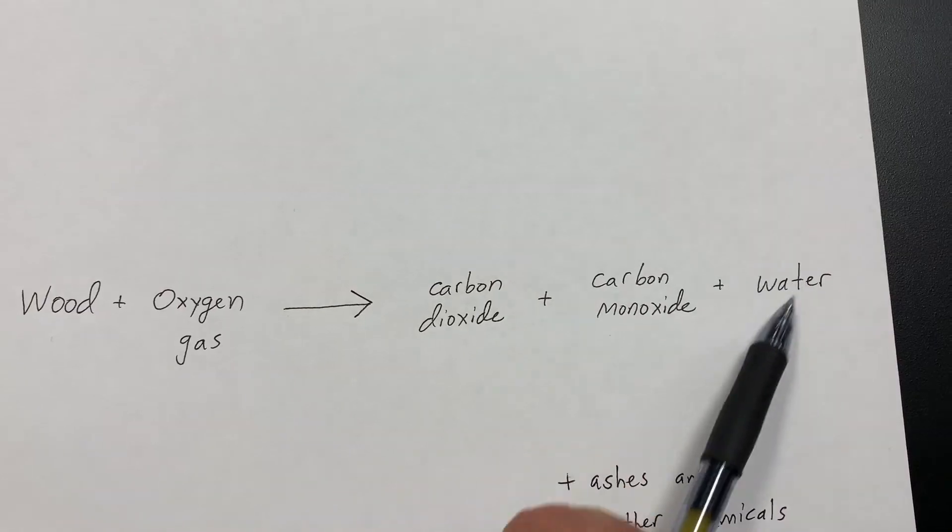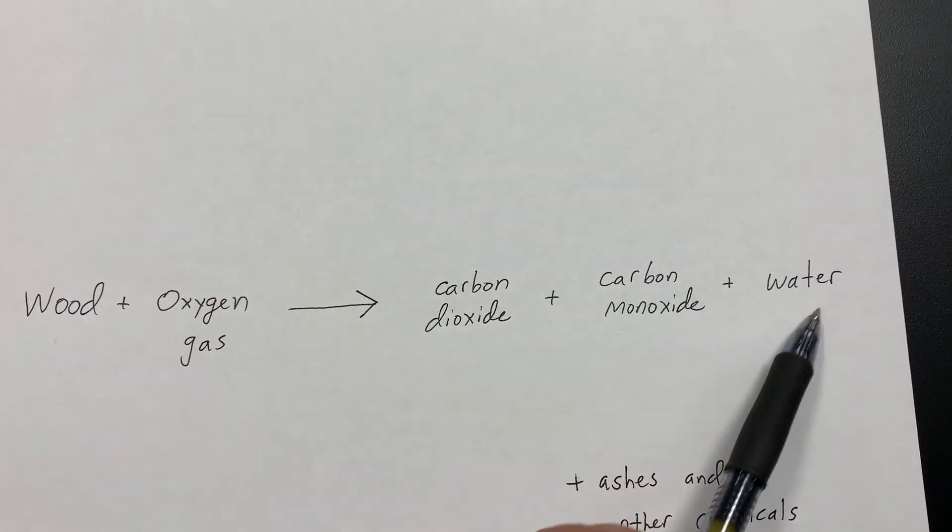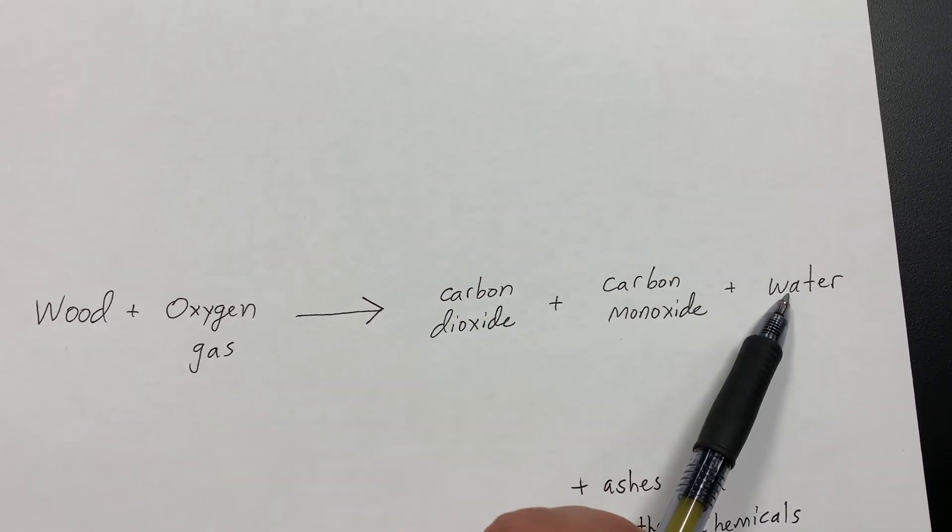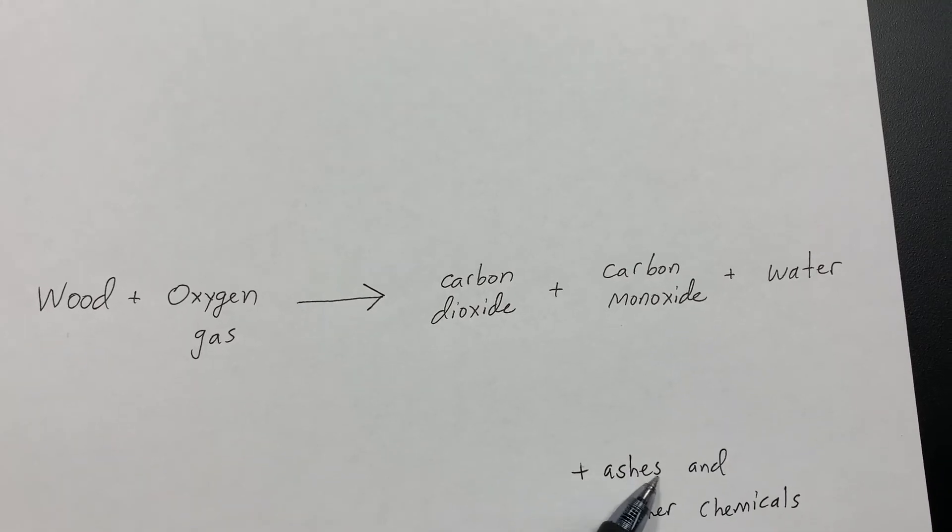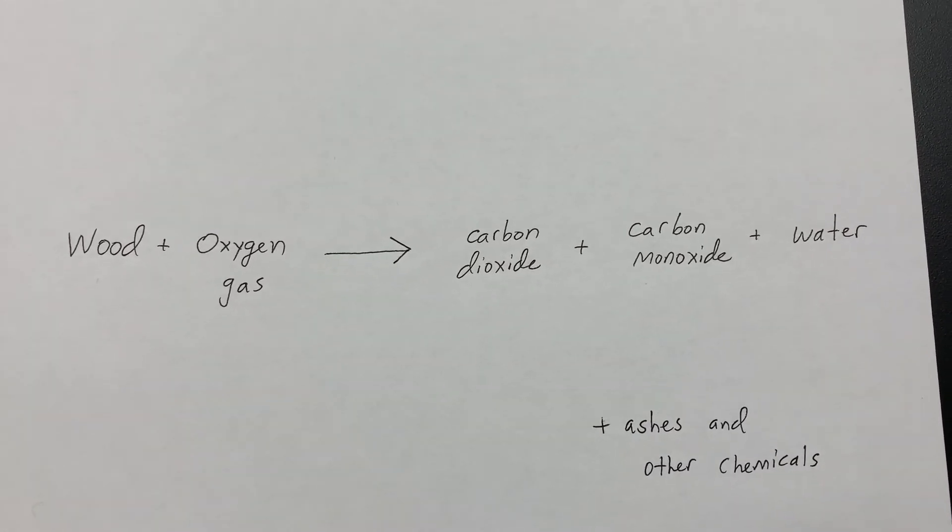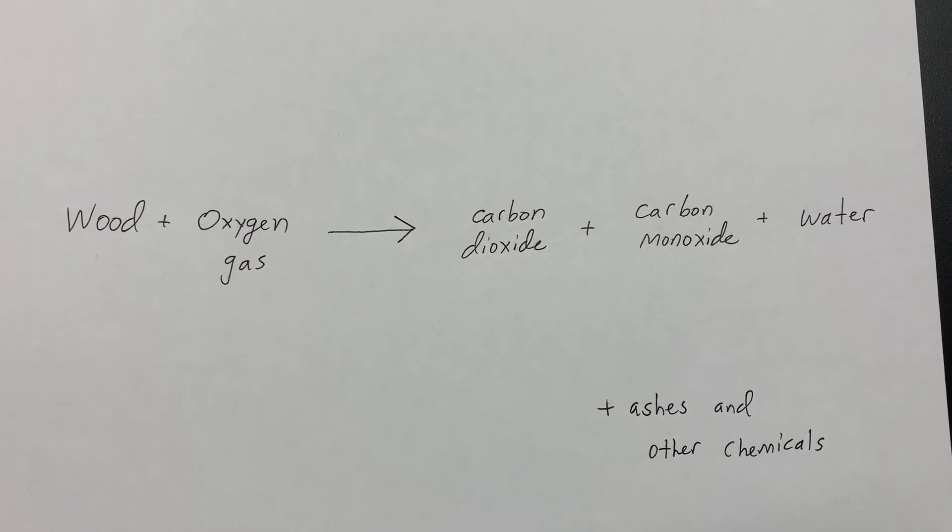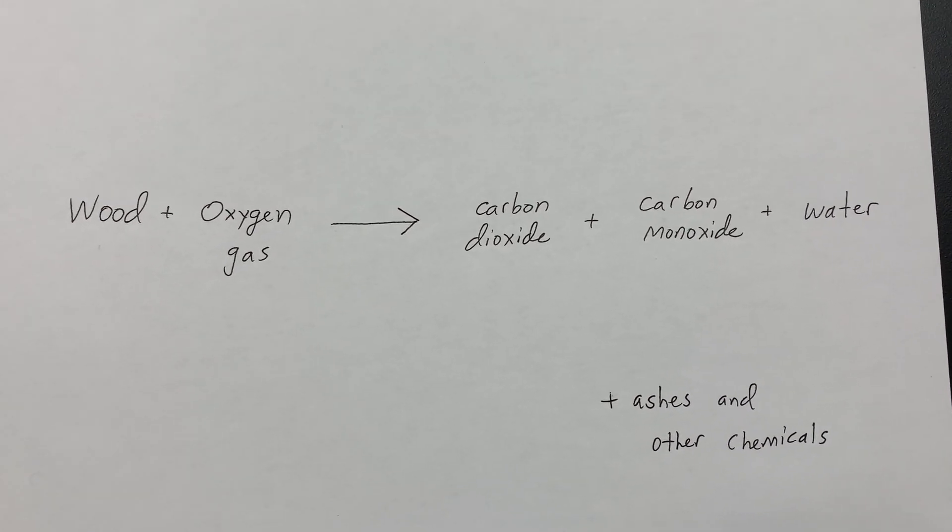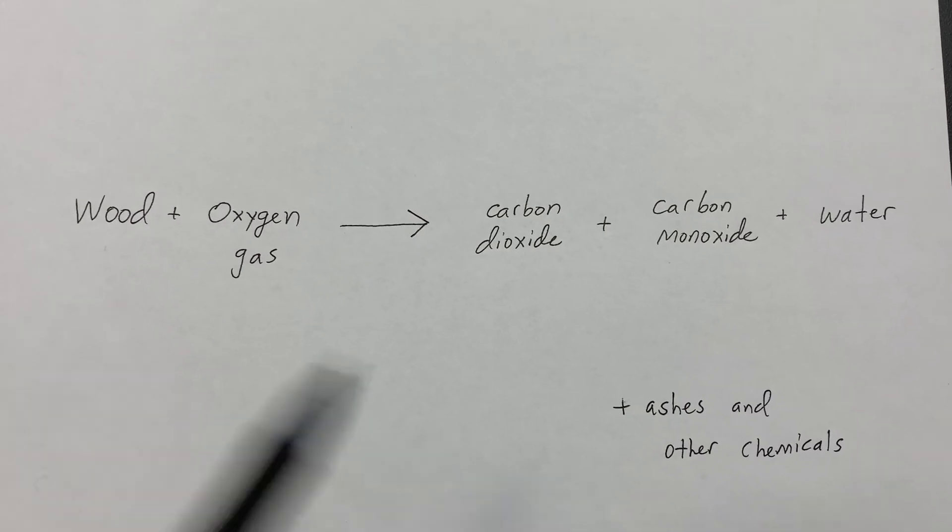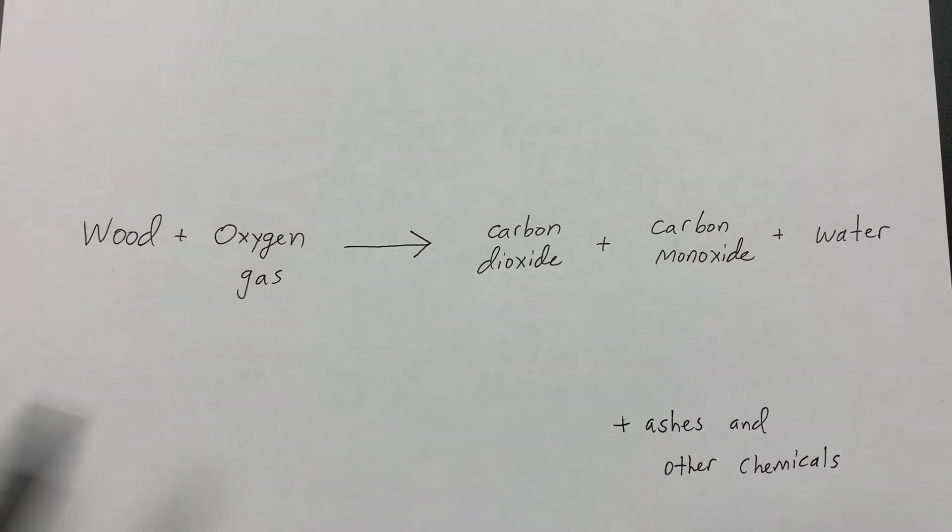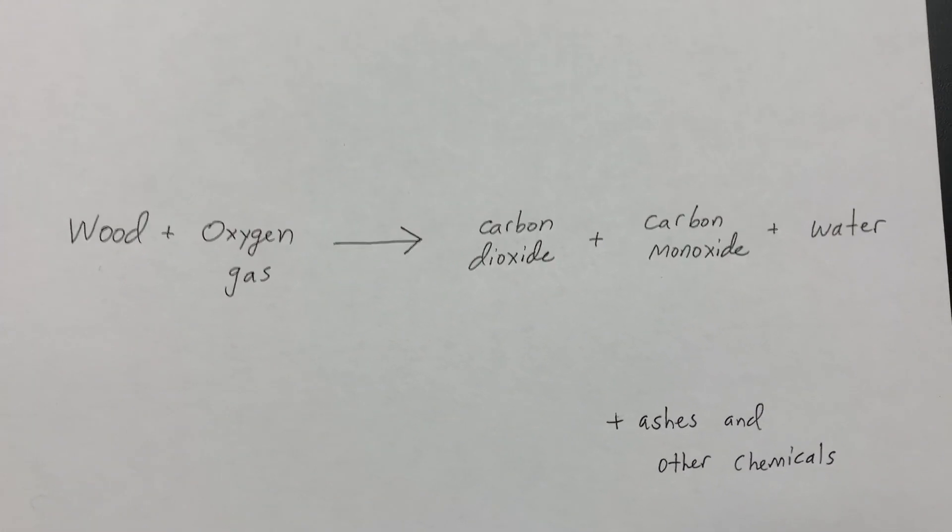Most of the products of burning wood are gases. There are three gases that go into the air, plus some ashes and other chemicals that might be left behind. So it's no wonder 70% of the mass of the wood goes into the air and only about 30% of the materials are left behind as ashes. When you burn wood, most of it leaves and goes into the air.